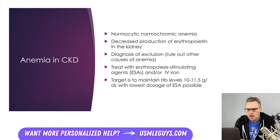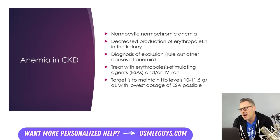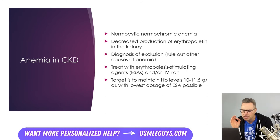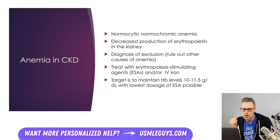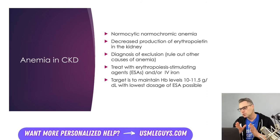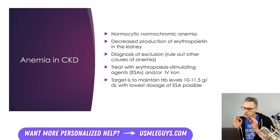Anemia will arise in CKD as a result of diminished production of erythropoietin by the kidney, resulting in a normocytic, normochromic anemia. Before treating, we need to make sure CKD is the actual cause — this is a diagnosis of exclusion. Labs to check include CBC with differential, reticulocyte count, serum iron, TIBC, percent transferrin saturation, serum ferritin, B12, folate, and check for a GI bleed. Once other causes are excluded, treat with ESAs or IV iron, targeting hemoglobin levels between 10 and 11.5 grams per deciliter.